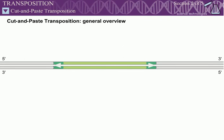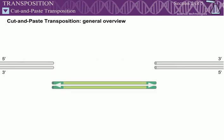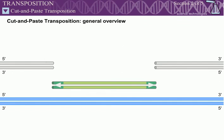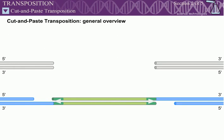Simply put, cut-and-paste transposition involves the excision of a transposon from its initial location in the genome, followed by integration of this excised transposon into a new DNA site. This is a non-replicative mechanism, meaning that the transposon is not copied during the transfer.